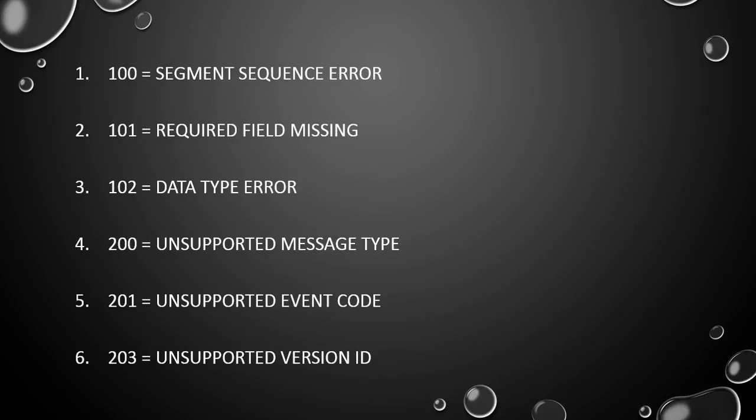Each of these have an error code. Error code 100 means the segments are not in the right order. Error code 101, a required field is missing. Error code 102, the information in a field does not match the data type that is coded for that field — for example, if you put letters in a field that was coded for numbers. Error code 200 means the message type is not supported by the interface. Error code 201, the event code is not supported. And error code 203 means that version of HL7 is not supported.